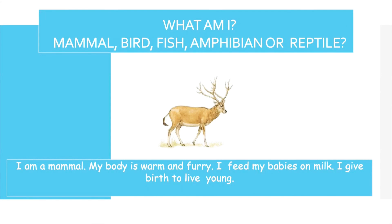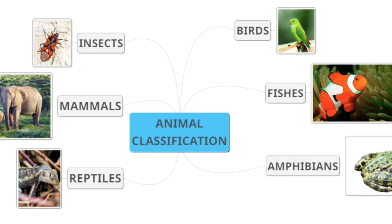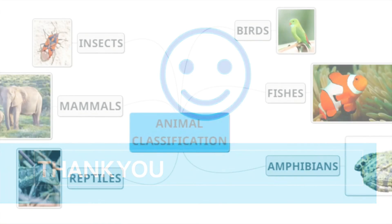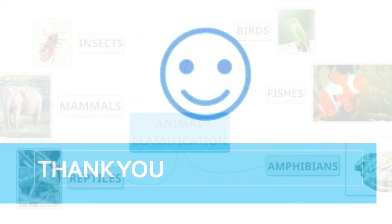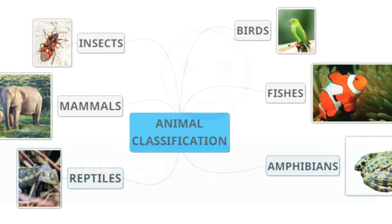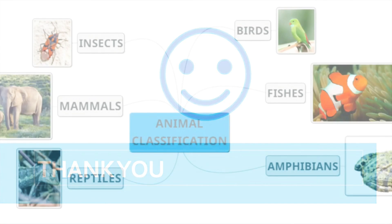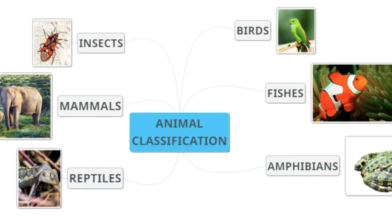The next one is a mammal because its body is warm and furry, it feeds its babies on milk, and gives birth to live young. Great job — now you are all thorough with the six types of animals around the world. Keep going!